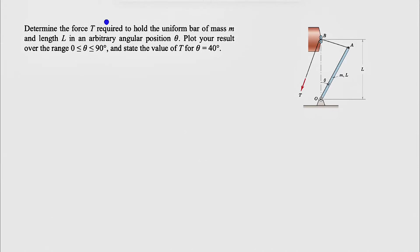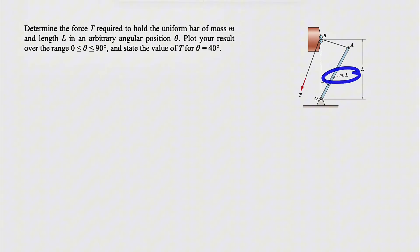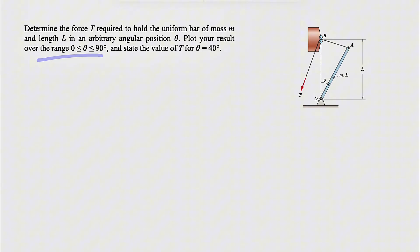Alright guys, this is going to be an interesting one - another question from the third chapter of the Meriam textbook, Engineering Mechanics. We need to determine the force T required to hold the uniform bar with mass M and length L in an arbitrary angular position theta. We also need to plot our results in the range of theta from 0 to 90 degrees, and find the value of T for theta equals 40 degrees.